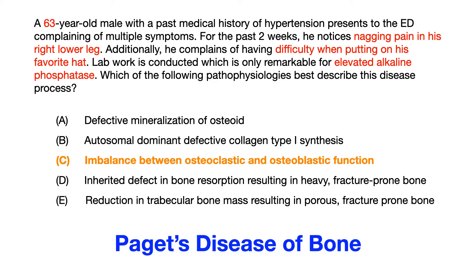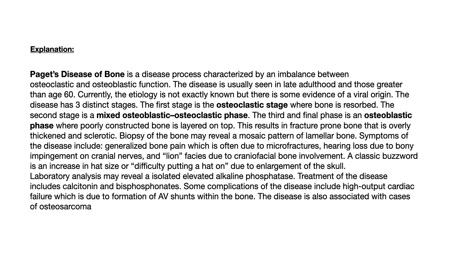What we're talking about here is Paget's disease of the bone. Paget's disease of the bone is a disease process characterized by an imbalance between osteoclastic and osteoblastic function. The disease is usually seen in late adulthood, in those greater than age 60. Currently, the etiology is not exactly known, but there's some evidence of viral origin.